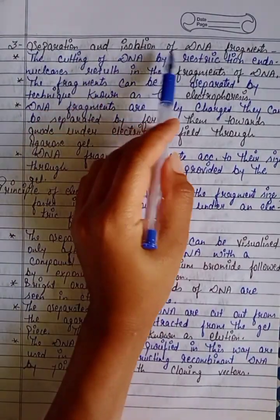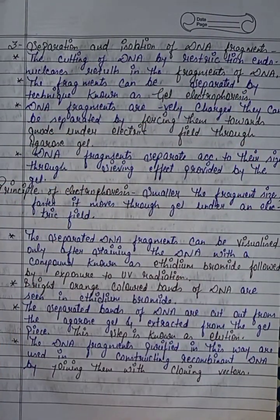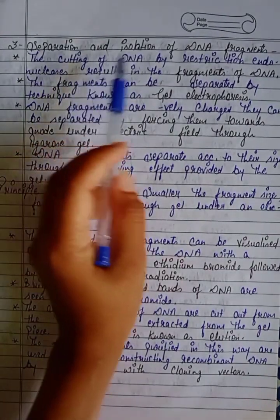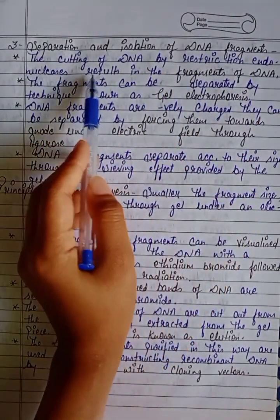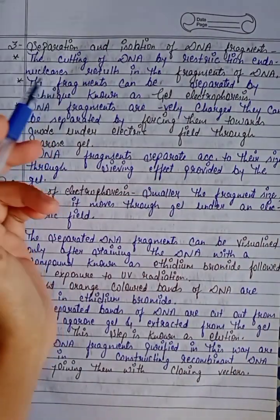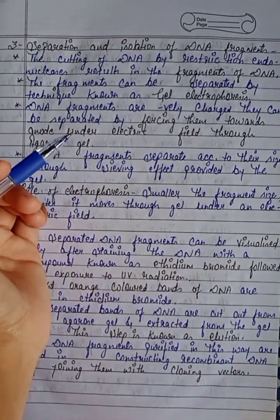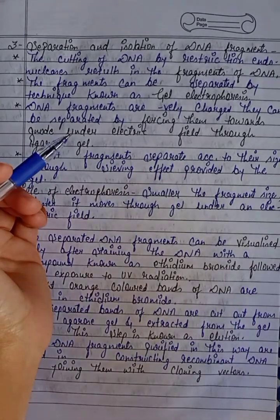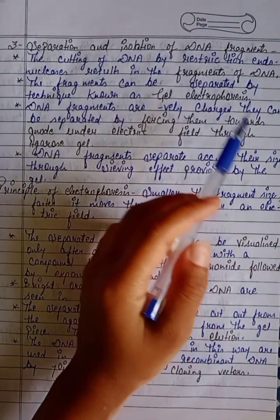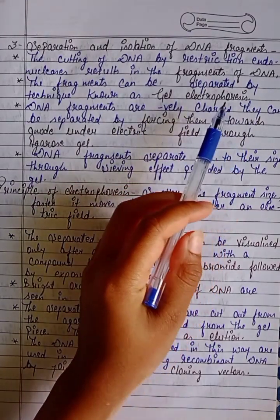Now, separation and isolation of DNA fragments. How do we separate and isolate DNA fragments? The cutting of DNA by restriction endonuclease results in fragments of DNA. These fragments can be separated by a technique known as gel electrophoresis.